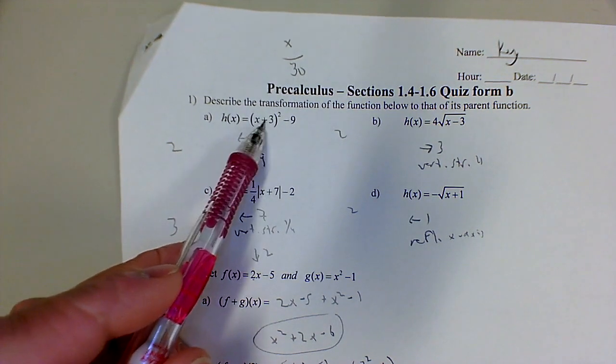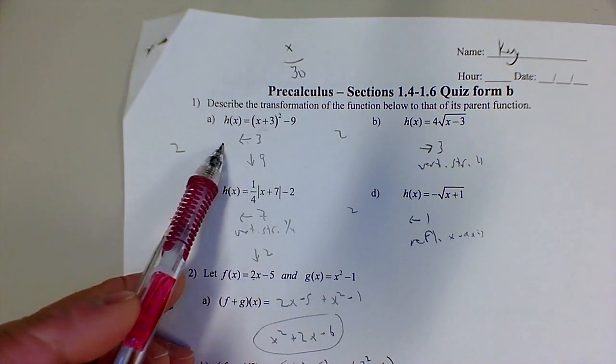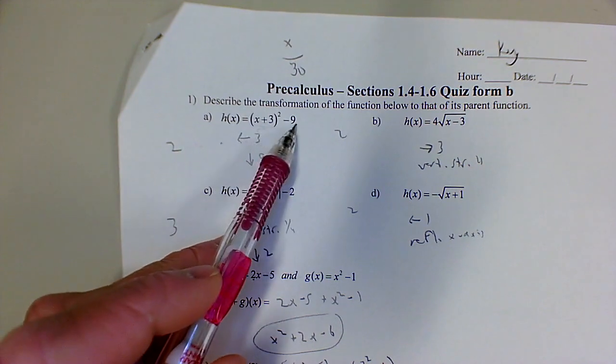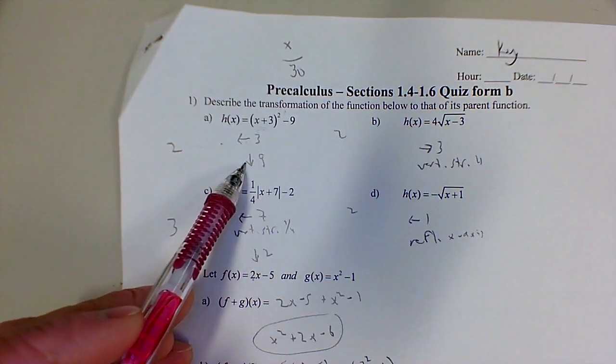Because we're adding 3 to the independent variable, it shifted left 3, or you can say left 3. And because this is outside, we're shifting the whole thing down, so it's down 9.